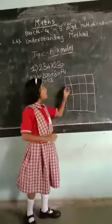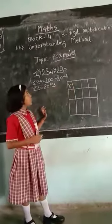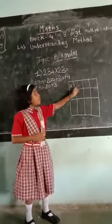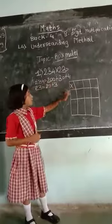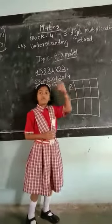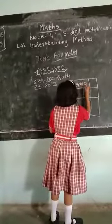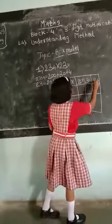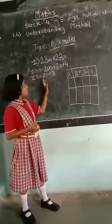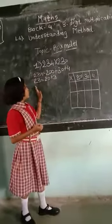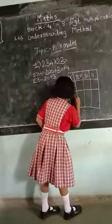Now view the multiplication sign and write this number in the column. Write the 3-digit number on top of the box — our 3-digit number is 234. And write the 2-digit number on the right side of the box — our 2-digit number is 23.